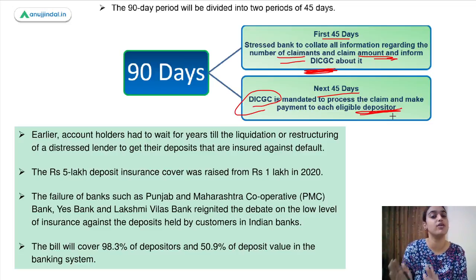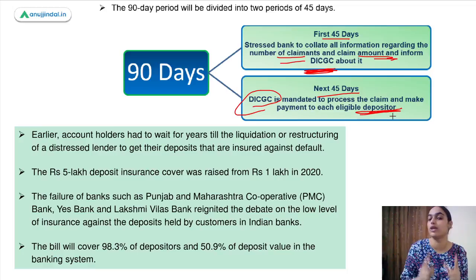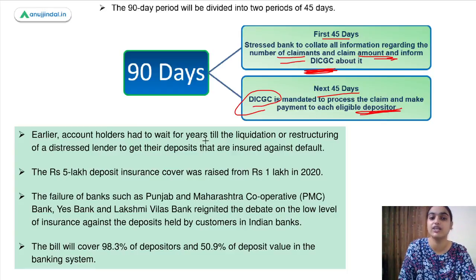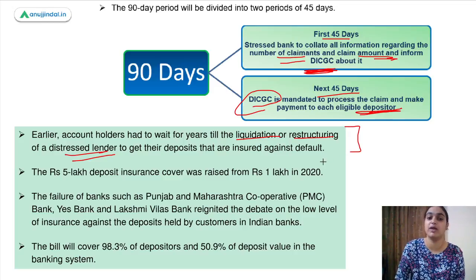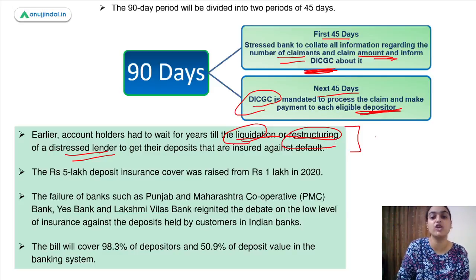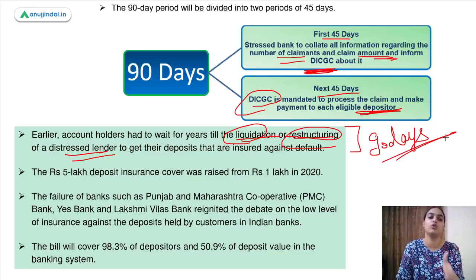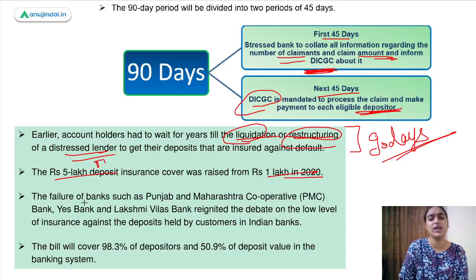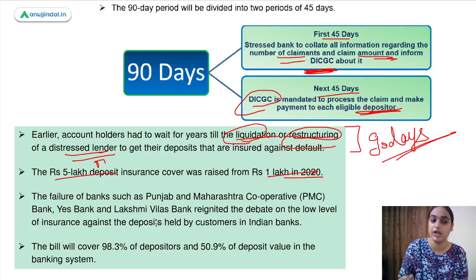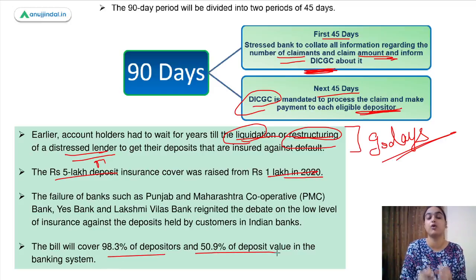DICGC will pay back the amount not exceeding 5 lakhs. Earlier, account holders had to wait for years till the liquidation or restructuring of the distressed lender — they had to wait for assets to be sold off before getting repayments. There have been failures of different banks like PMC, Yes Bank, and Lakshmi Vilas Bank, because of which depositors suffered. This bill is going to cover a large percentage of depositors and deposit value in the banking system.